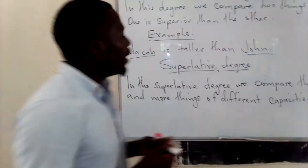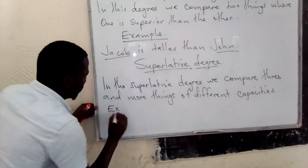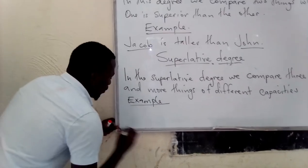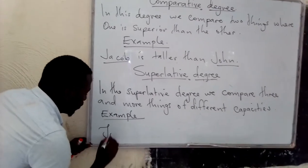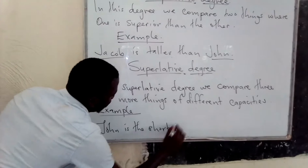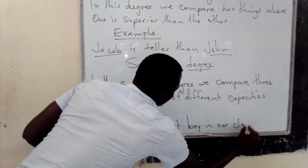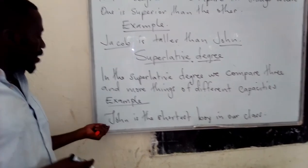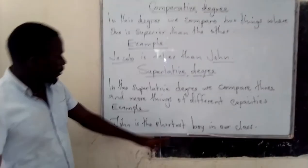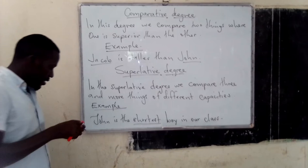We compare three and more things, but of different capacities, unlike the comparative and positive degree where we compare two things. In the superlative degree, we compare three and more things of different capacities. For example, the sample sentence: John is the shortest boy in our class. We are saying that John is the shortest — in the class we are more than two, but we realize that John is shorter than everybody in the classroom.